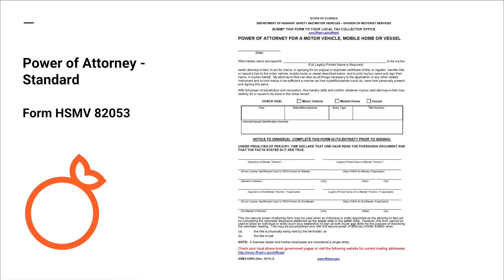Power of attorney form A2053: this power of attorney is used by sellers to authorize an attorney-in-fact to sign on their behalf. In most cases, this is due to a title not being available at the time of sale.